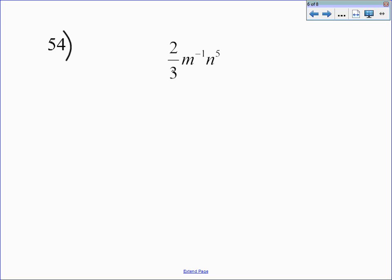Okay, so this first example, which is question number 54 from your homework, is 2/3 m to the negative first power n to the fifth. So as I just said, this m to the negative first power is what we're going to focus on today. That is what we consider broken, and we're going to try to fix that.